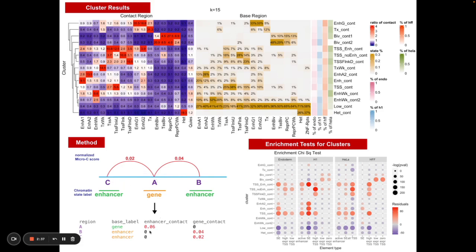Together summed that gives us a score of 0.06 and the same process is applied to every region in the genome with a chromatin state label. We get this resultant matrix of microc scores which are based on contact with other regions.